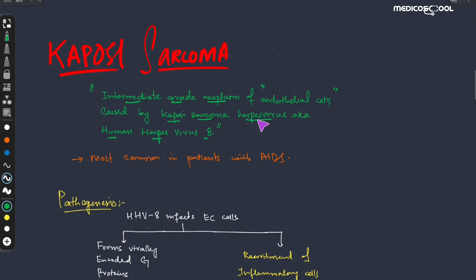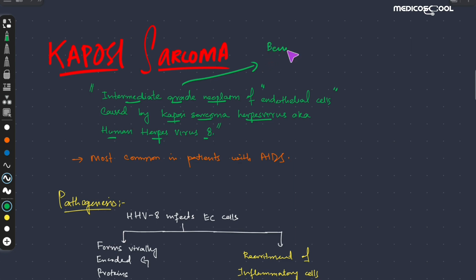It is intermediate grade in the sense that it is a neoplasm between the benign and malignant neoplasm. Its malignancy is between benign and malignant, that is why it is known as the intermediate grade neoplasm of the endothelial cells.